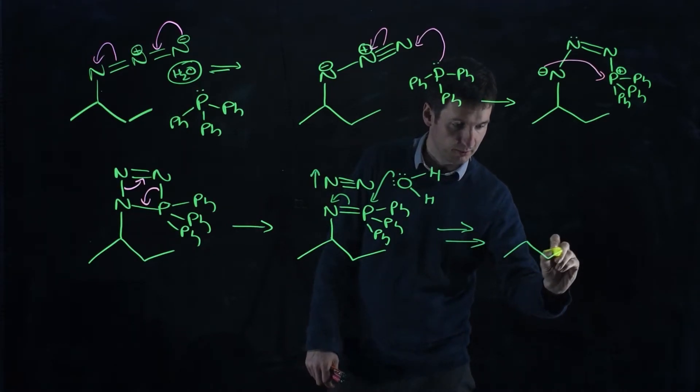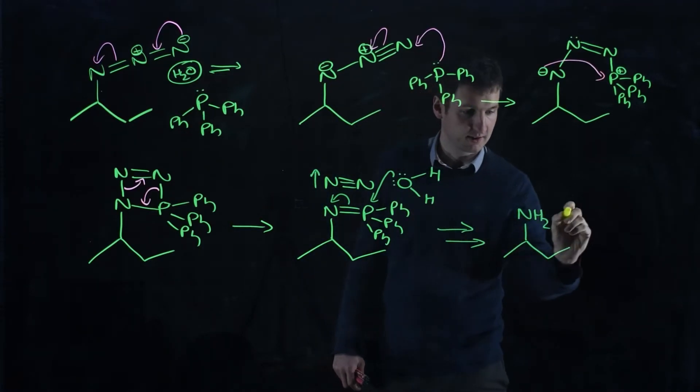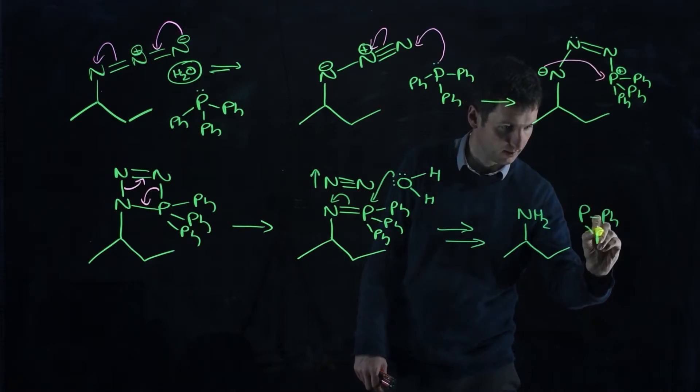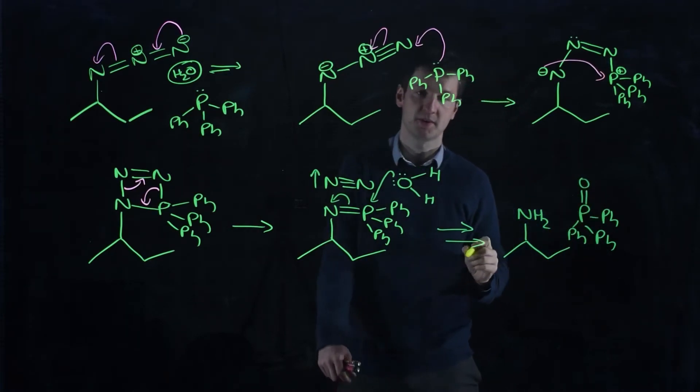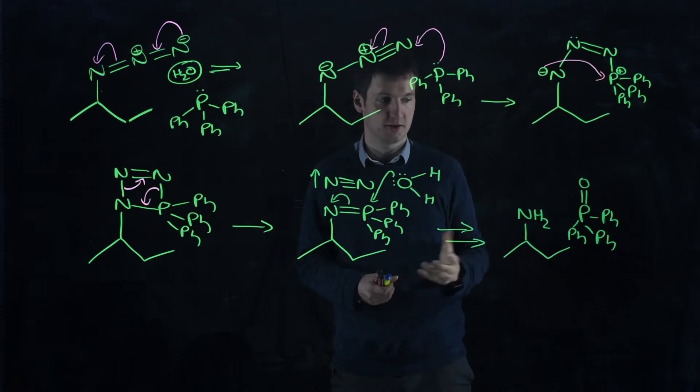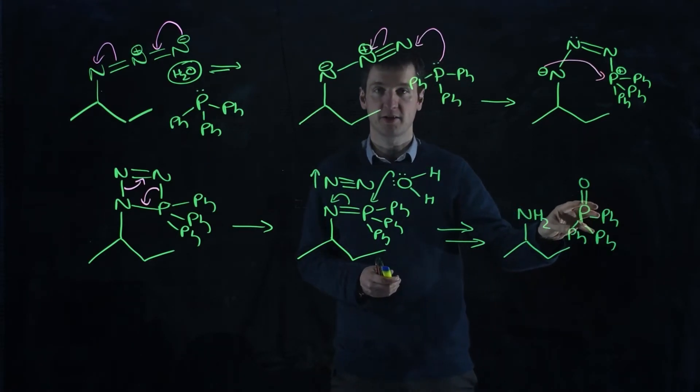What you'll end up with is a primary amine, NH2, and triphenylphosphine oxide. So triphenylphosphine oxide, the oxygen phosphorus bond, double bond, is very strong, also energetically favorable.